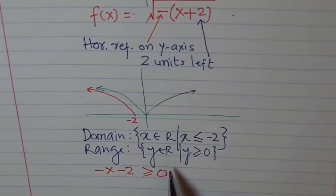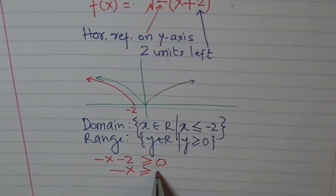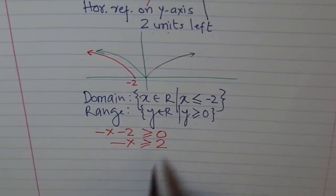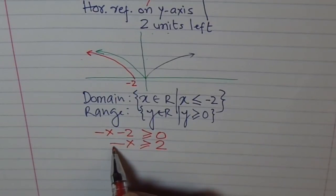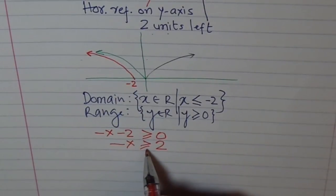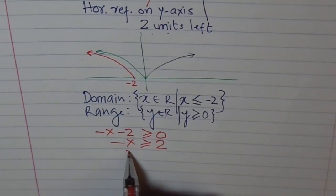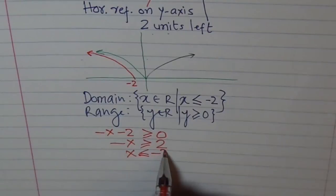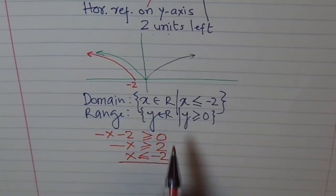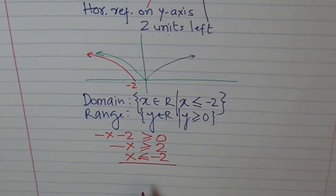Let us solve this inequality. We will transfer this on this side. So this is minus x is greater than equal to, we will bring to this side. So it becomes plus two. And now, you multiply by minus on both sides. When you do so, don't forget to change the sign. And when you change the sign, it becomes x is less than equal to minus two. So that is our result. We got it, right? x is less than equal to minus two. Perfect.